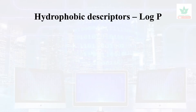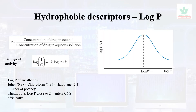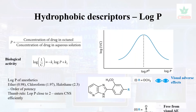Hydrophobic descriptors — first, log P. Log P relates the partition of a compound between hydrophobic and hydrophilic environments. If log P is close to 2, it can penetrate the CNS — that is the thumb rule. For example, ether has log P of 0.98, chloroform is 1.97, halothane is close to 2. An example substituent such as sulfonyl (S=O, OCH3) is shown as an adverse effect — this is a hydrophobic descriptor.